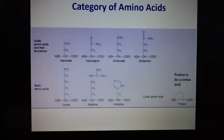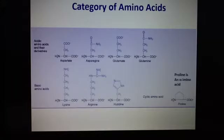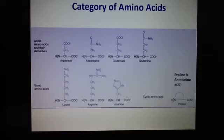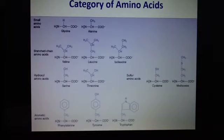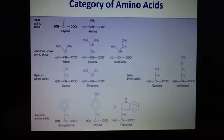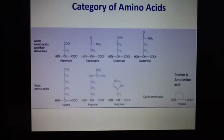Now looking at acidic amino acids and their derivatives — let's look at the shape to understand why they are acidic. Also, the aromatic amino acids have phenol rings, which makes them aromatic and gives them their characteristics.